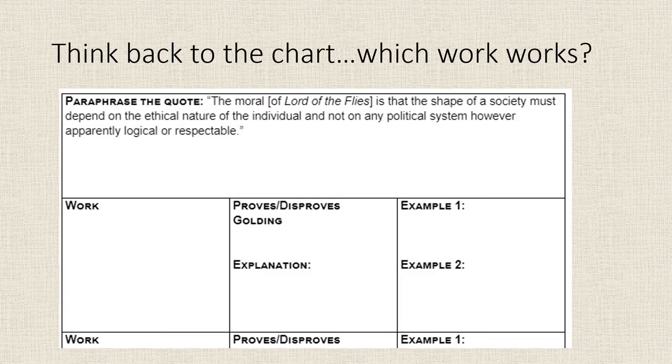So thinking back to the chart that you did in the last lesson, how is it that these words fit? And do they prove Golding or disprove Golding? So what would Harper Lee say about the idea of society and the nature of individuals? Does she think that society and the shape of our society depends on everybody doing the right thing? Or is there some sense that the systems that we have work and that they're important in, let's think of it in terms of kind of forcing people to do the right thing.